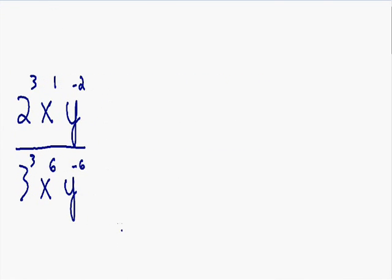Now we have successfully gotten rid of the parentheses. The next thing is to simplify the constants in the front of the expression. We have 2 cubed: 2 times 2 times 2 equals 8. In our denominator we have 3 cubed: 3 times 3 times 3 equals 27.